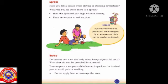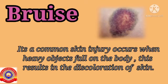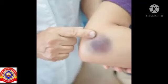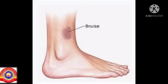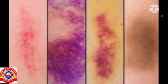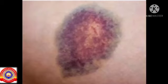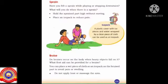Shall we move on to the next topic? The next topic is bruise. Do you know what a bruise is? It's a common skin injury that occurs when heavy objects fall on the body, and this results in discoloration of the skin. Do you know the reason for this discoloration? When heavy objects fall on the body, the small blood vessels under the skin bleed, and it causes black, blue, purple, brown, or yellow discoloration of the skin.